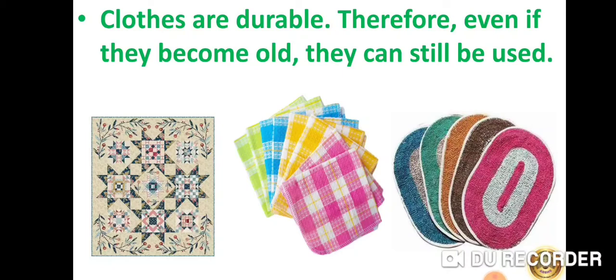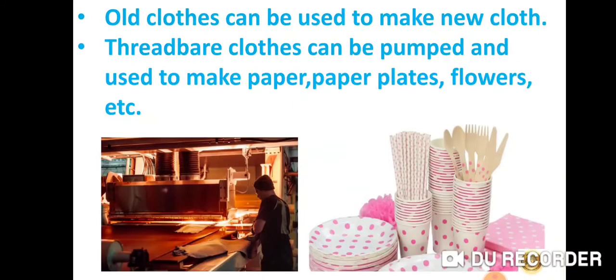Are you aware that old clothes can still be of some use to you? You can use them as a towel, as door mats, or as a carpet, or you can also make a quilt out of them. Old clothes can be used to make new cloth. Thread-bare clothes can be pulped and used to make paper, paper plates, flowers, etc. These are the different uses of old cloth.